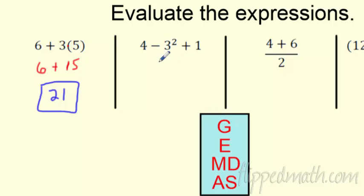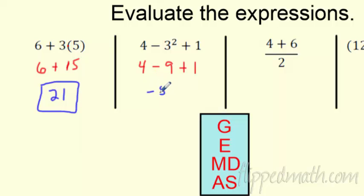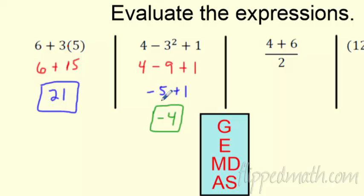There are no groupings here, but there is an exponent: 3 squared is 3 times 3, which is 9. Now for addition and subtraction — they're the same level — I go left to right. So 4 minus 9 is negative 5, plus 1. Then negative 5 plus 1 is negative 4.